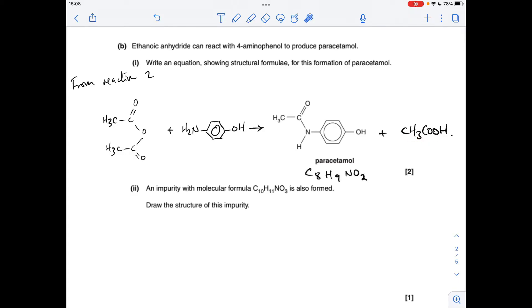Moving on, this impurity. I've written up the molecular formula of paracetamol and I'm going to compare that molecular formula with the impurity's molecular formula. You can see we've gone up by two carbons, two hydrogens, and an oxygen. So effectively, if we take one of these hydrogens off and replace it with a CH3CO group, we're actually going to get that new molecular formula.